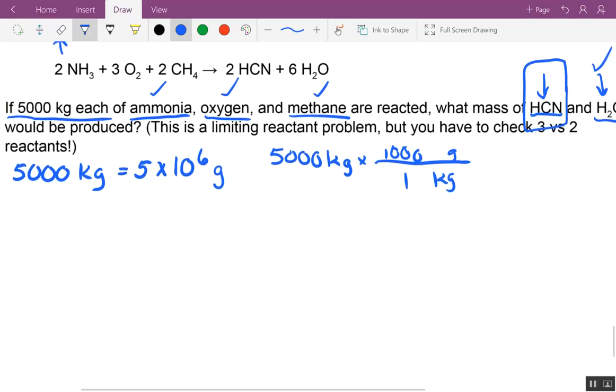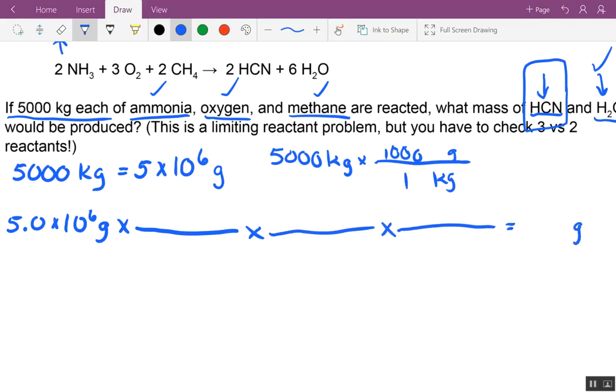What you're going to have to do, and I'm going to let you start this, I'm using scientific notation. You're going to have to do three mass-to-mass problems to figure out how many grams of hydrogen cyanide you're going to make, and we're going to start with the NH3.